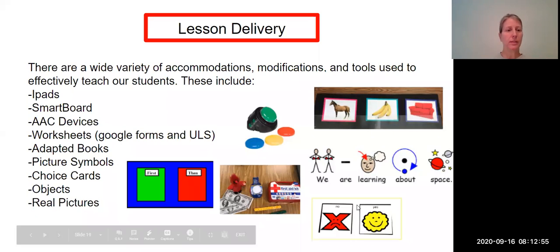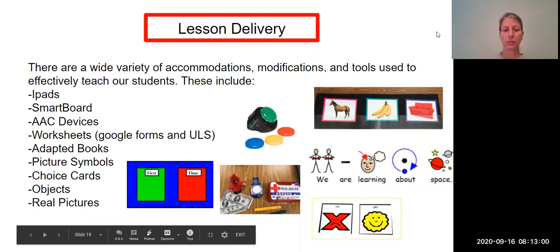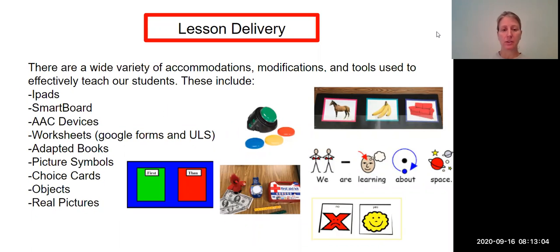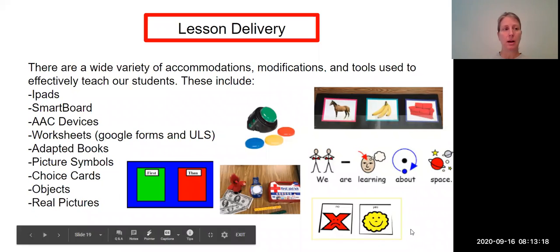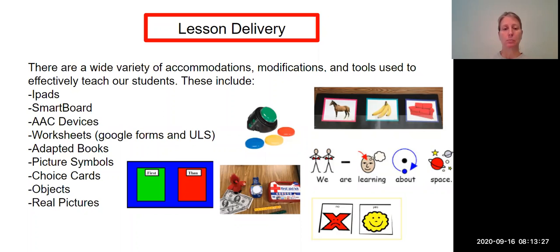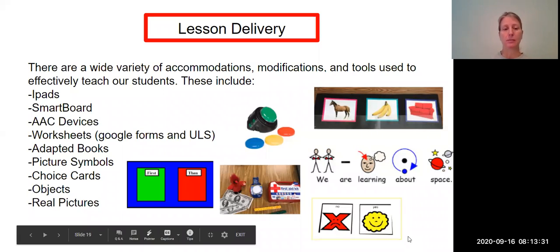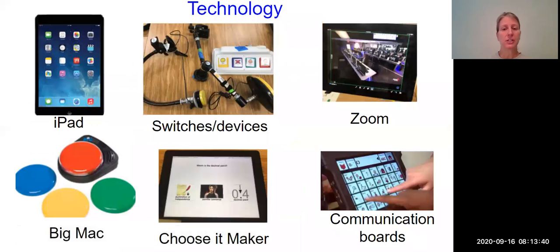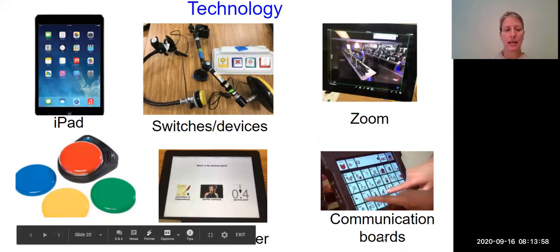Here we have lesson delivery — a wide variety of accommodations, modifications, and tools that we use with our students. We use first-and-then boards. You've seen in our videos that we give students stars as rewards. We also have picture symbols laid out on a black background, and yes/no cards that we use with students in our classrooms, as well as your visual resource binder. That device that's black with green, red, yellow, and blue is called a Big Mac or a step-by-step — we can record our voices and the students can activate it to choose their answer. These are different forms of technology we use — you have an iPad, students are already familiar with the Zoom platform.